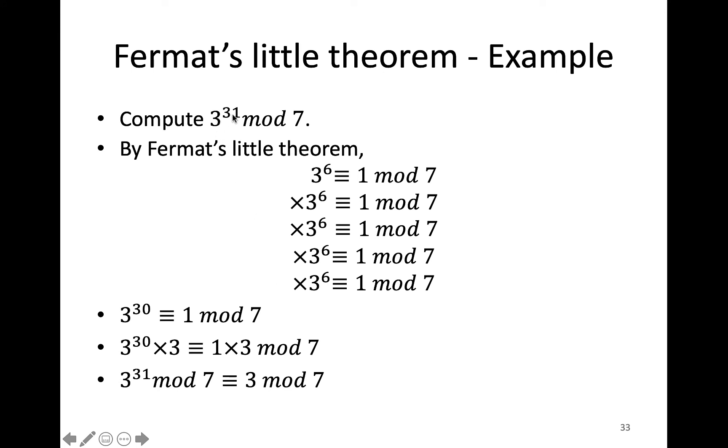So instead of calculating 3^31 divided by 7, I applied Fermat's Little Theorem, and then I know that the remainder is 3.